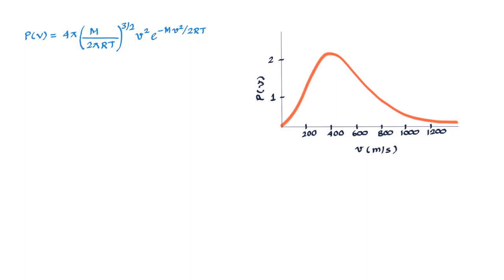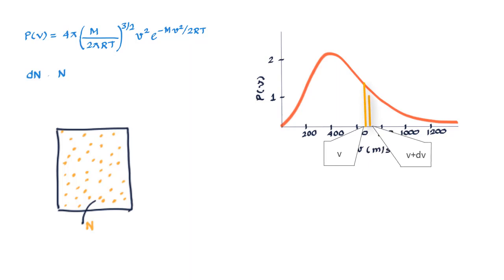Well P(v) is called the probability distribution function, and to understand this let us assume that we have n number of molecules in a sample, and of these n molecules we say a very small number of molecules say dn have velocities in the range v and v plus dv.